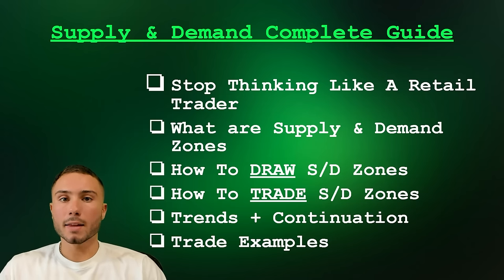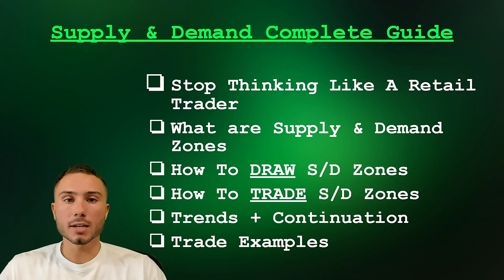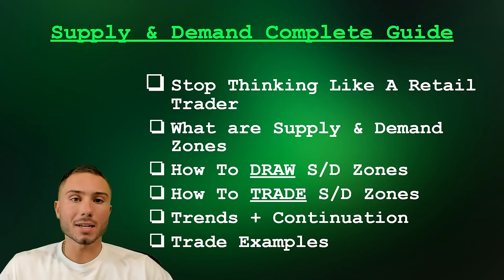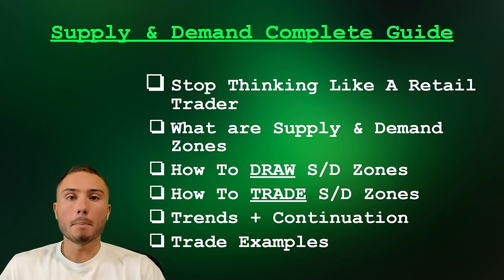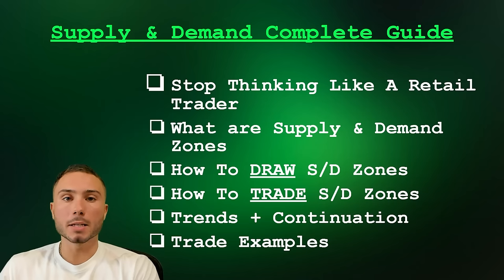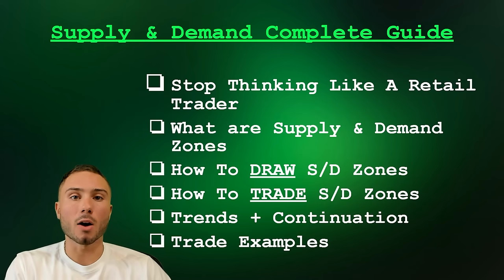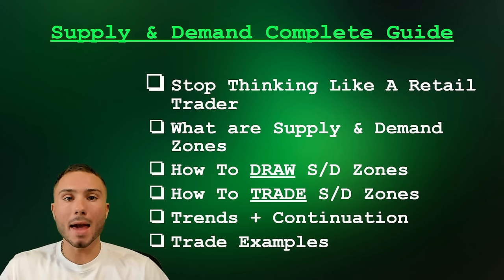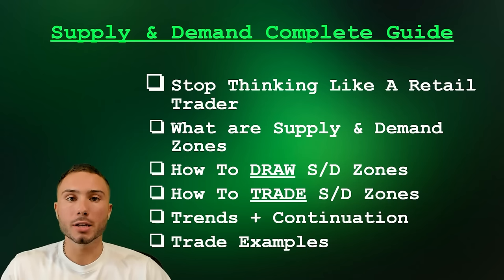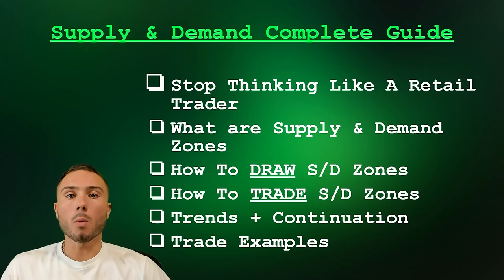Trading with supply and demand is very powerful. It puts us in the position to trade on the same side as smart money — buy when smart money is buying and sell when smart money is selling. Big banks, institutions, or just traders with a large enough pocket that they can move the market.